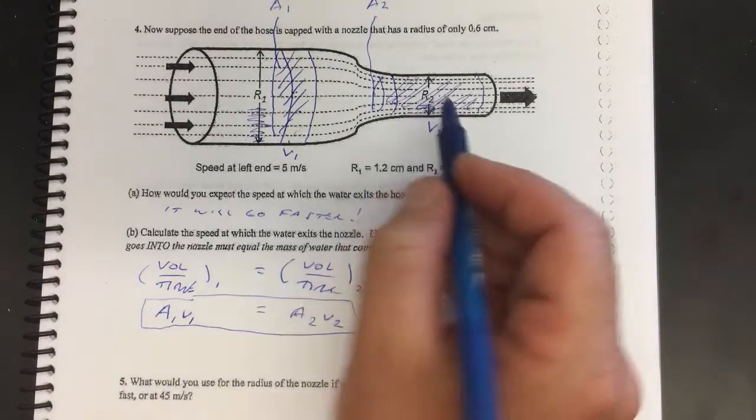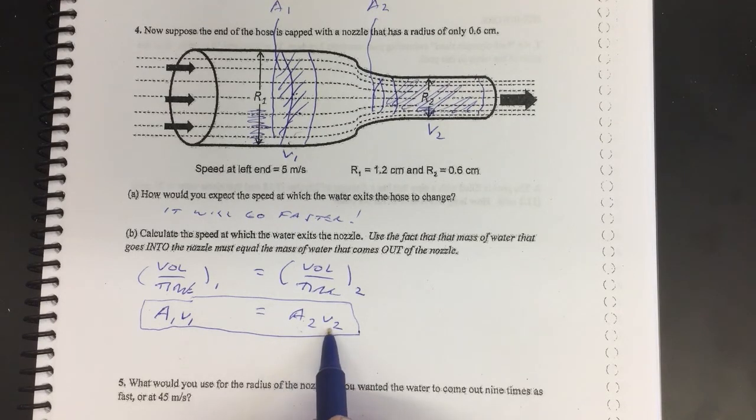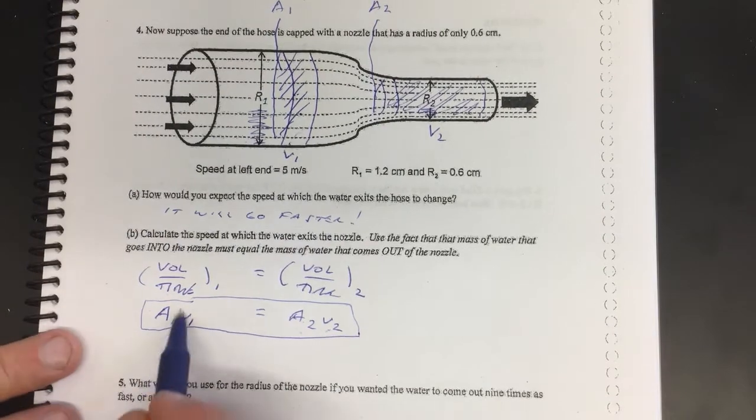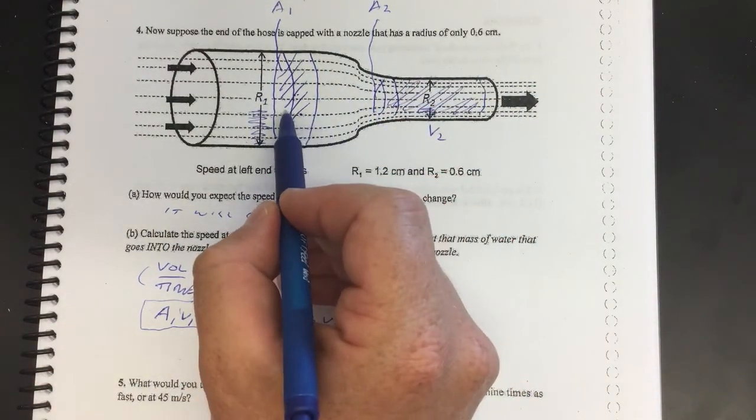That lets you see that if you make a smaller area, like in a nozzle, that the speed will go up. So the smaller this is, the bigger this has to be to compensate. Now the reason this works is all this is saying is that you didn't lose any water. Whatever volume per time is flowing by here, that same volume per time needs to flow by there.